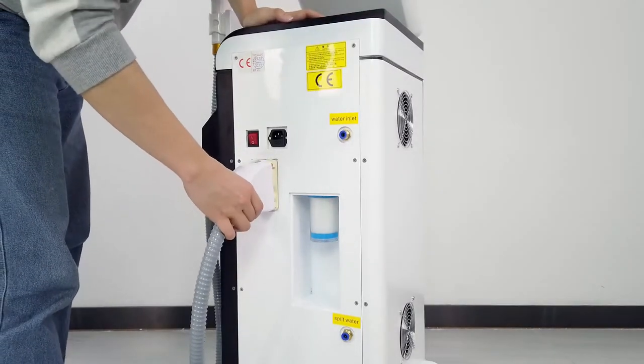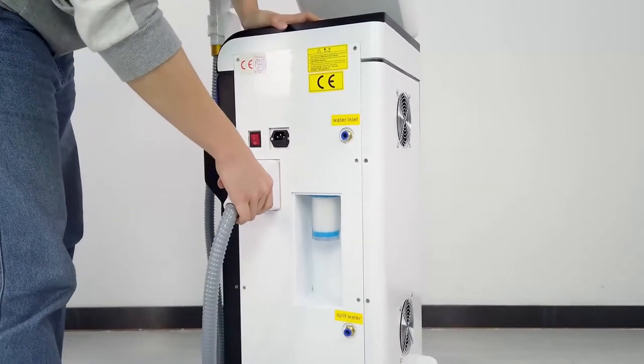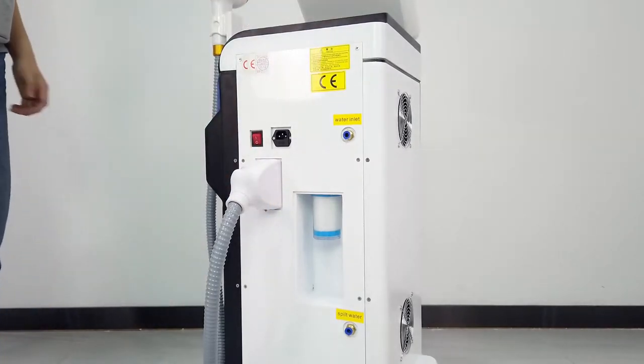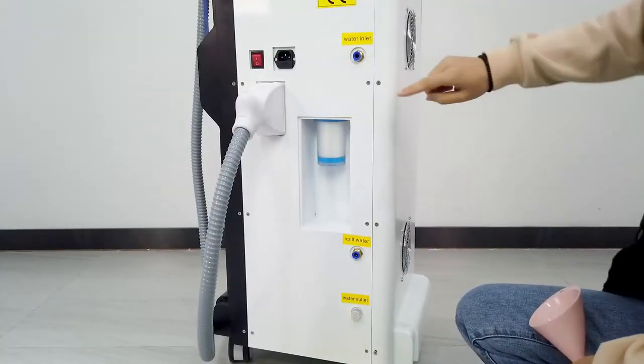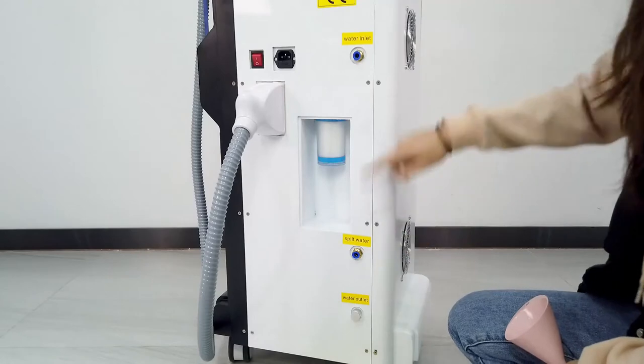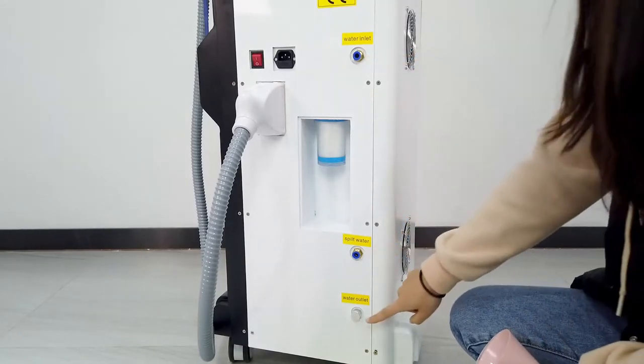We will receive the machine and install the handles on it. The machine has three holes for the water system: water inlet, spill water hose, and water outlet.